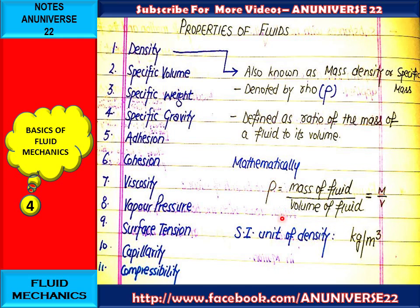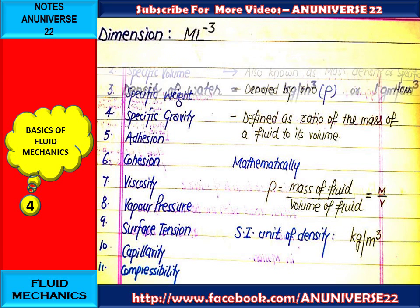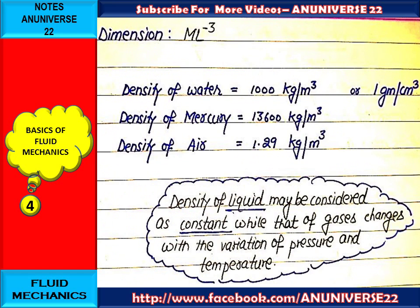Mass of fluid is denoted by capital M and volume of fluid by capital V. Now, the SI unit of density: the unit of mass is kg and unit of volume is meter cube, so it becomes kg per meter cube. The dimension of density is M L minus 3.